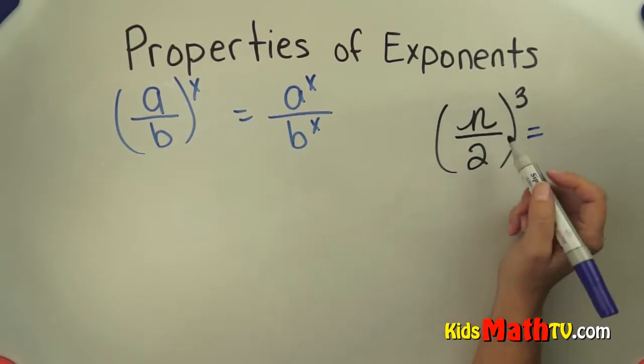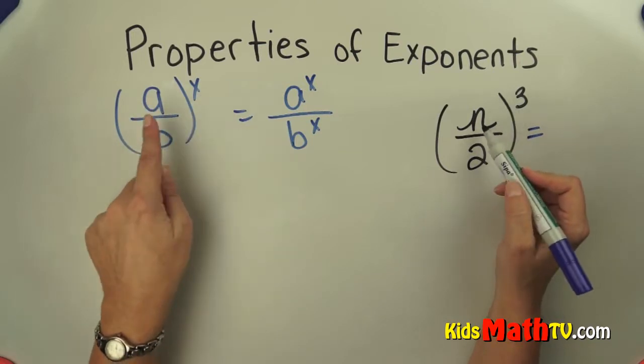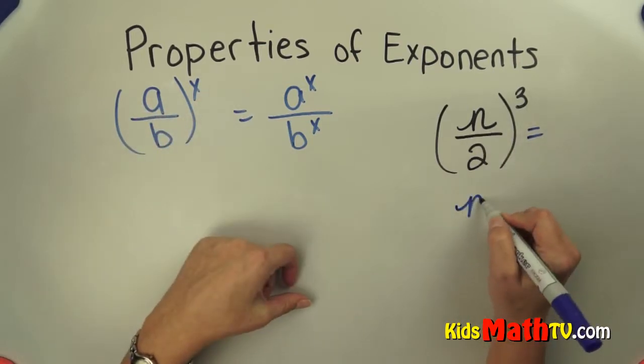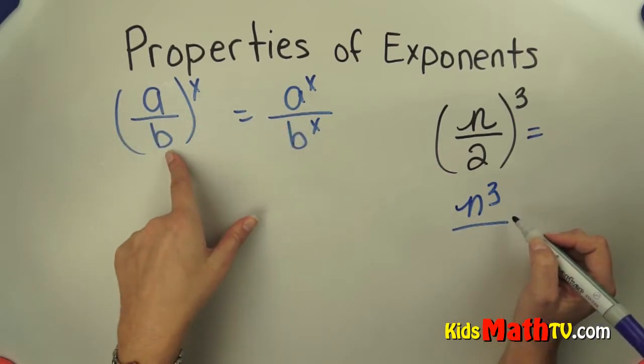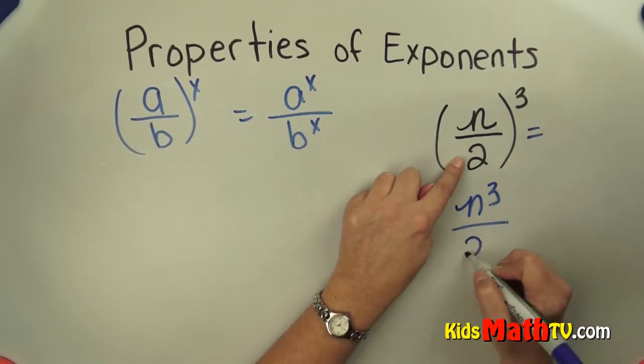I can rewrite it as a to the power of x or n to the power of 3 divided by... Now we're going to do this b, which is now the 2 to the power of 3.